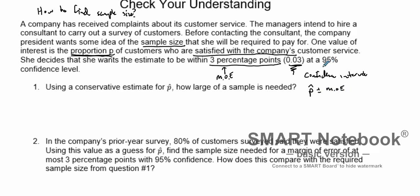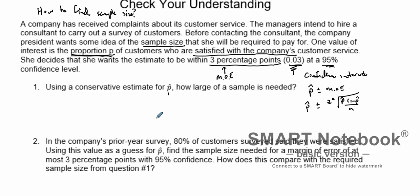We also have a confidence level of 95%. So using a conservative estimate for p-hat, how large of a sample is needed? Well, n is going to be determined from this: our critical value z times the square root of p-hat times (1 minus p-hat) over n — that's our margin of error. Since we want our margin of error to be three percentage points, we can do a little algebra and set 0.03 equal to that expression.